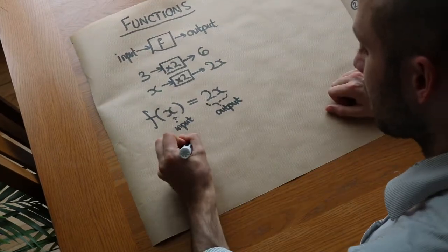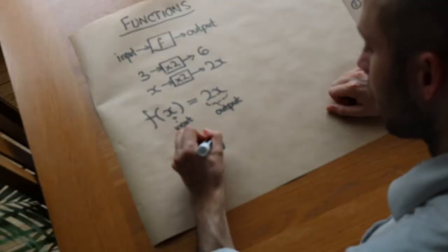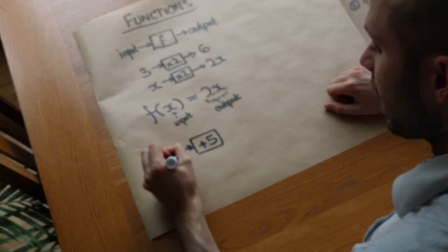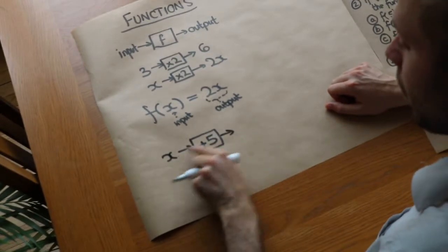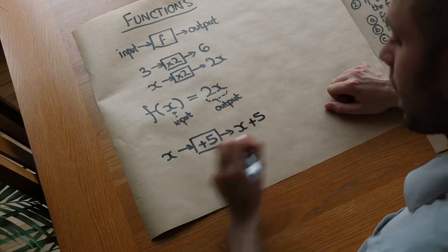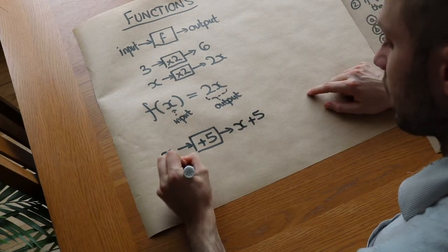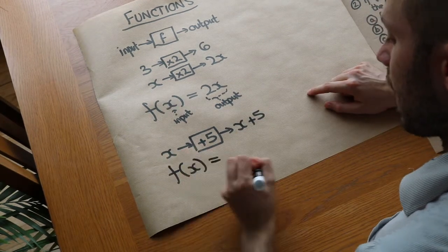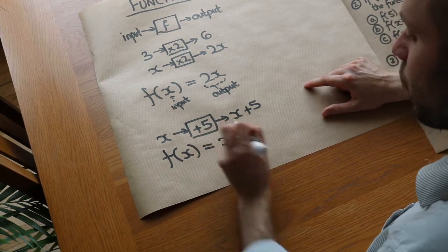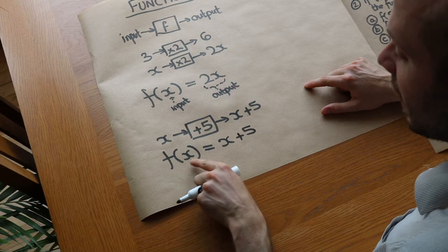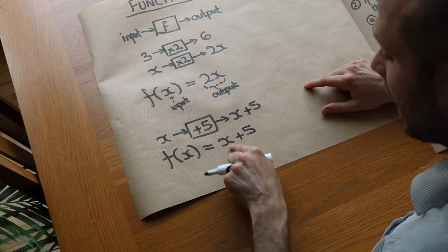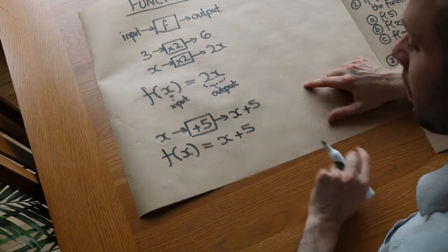Let's do some more examples. Let's just say that we had plus five. Then if the input was x, the output would be x plus five. And the way we'd write this using function notation is f of x equals that output expression. So on the right hand side we always put the output expression in terms of x — it's always an expression in terms of the input.